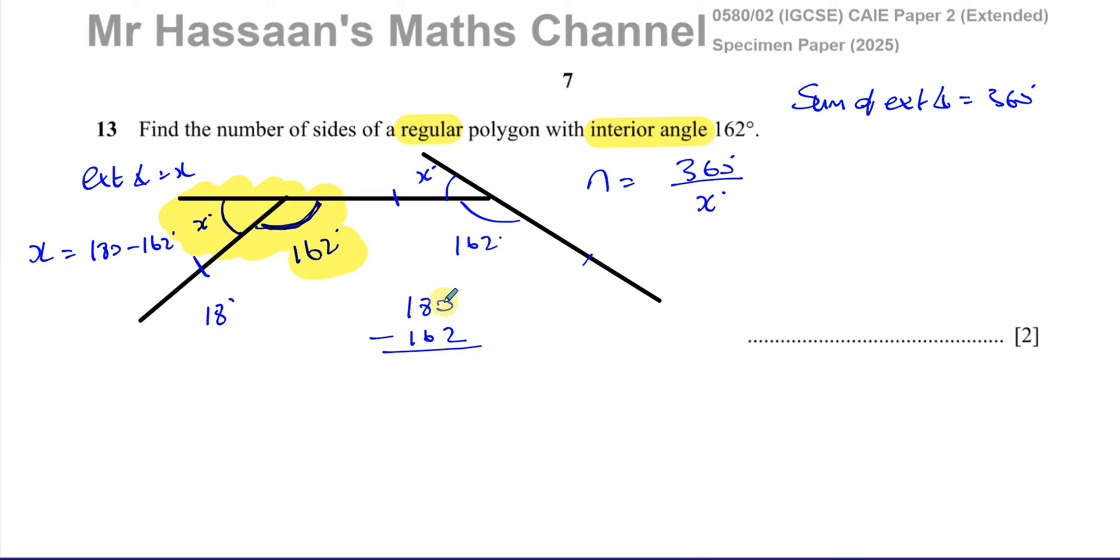You've got to borrow one from here and 10 minus 2 is 8, 7 minus 6 is 1 and that gives you 0, so 18 degrees. So that's going to be the size of the exterior angle. So 360 divided by 18 degrees. 18 goes into 36 two times, so you have 20 sides. The number of sides is 20.